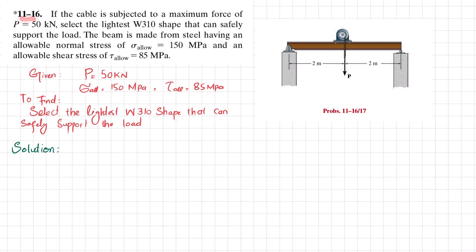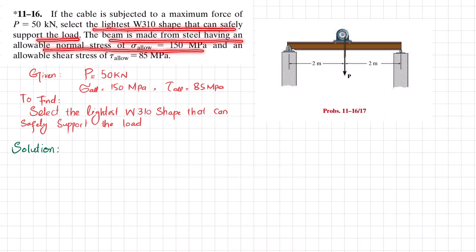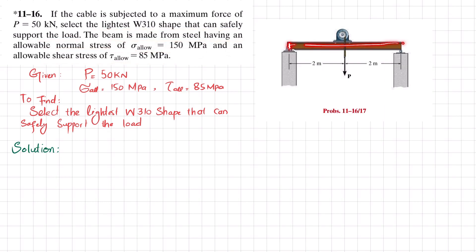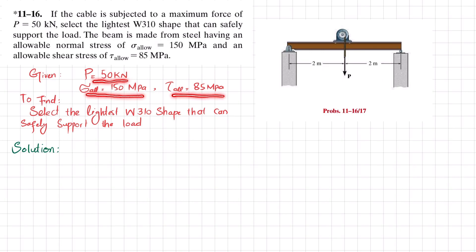Welcome back. Problem 11-16: if the cable is subjected to a maximum force of 50 kilonewtons, select the lightest W310 shape that can safely support the load. The beam is made from steel having an allowable normal stress of 150 megapascals and allowable shear stress of 85 megapascals. This is a simply supported beam with a hoist and cable exerting a load P equal to 50 kilonewtons.